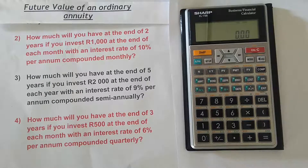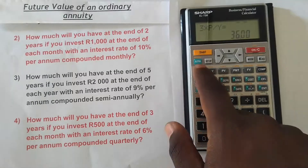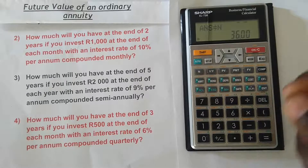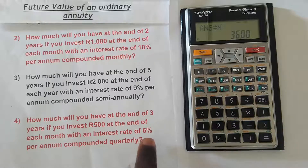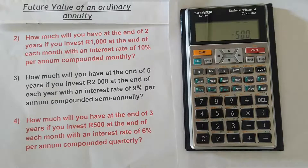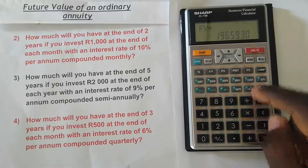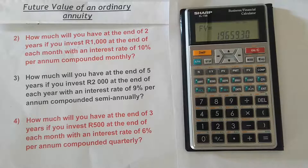The calculator now knows the payment period is monthly and the interest rate compounds quarterly. The number of years is 3, so press 3, then second function, N, then N again to confirm — it has taken 3 years times 12 compoundings per year. The interest rate is 6, so press 6 then I/Y. The payment is R500: press 500, plus/minus, then PMT. Press COMP then FV — the future value of the ordinary annuity is R19,659.30, which is how much you'll have at the end of three years.